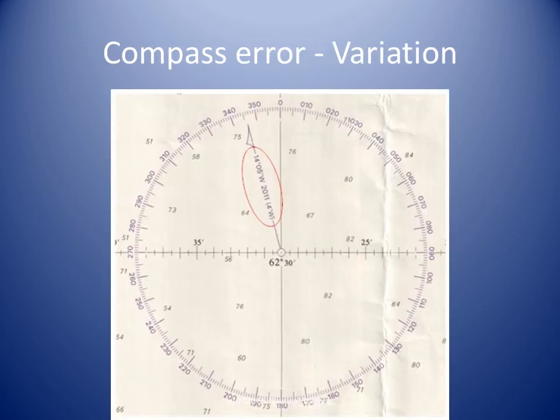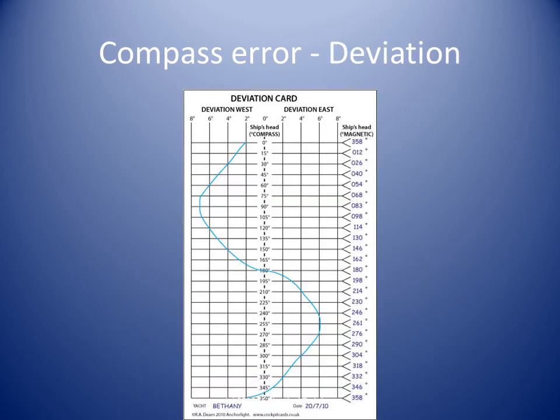Variation is the part of compass error that is caused by Earth's magnetic field. Deviation is the part of compass error that is caused by the ship's own magnetism.